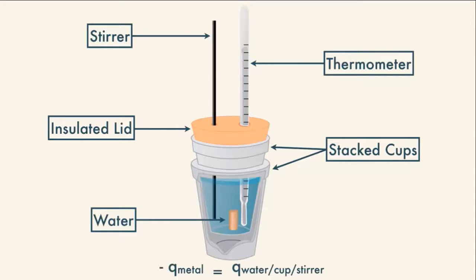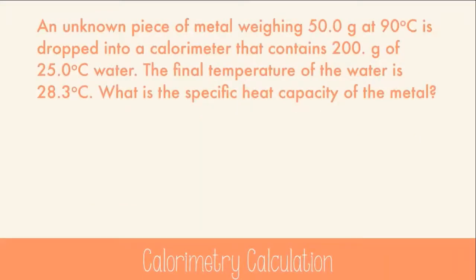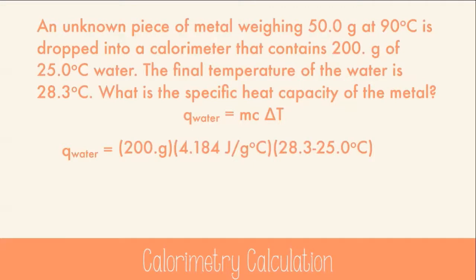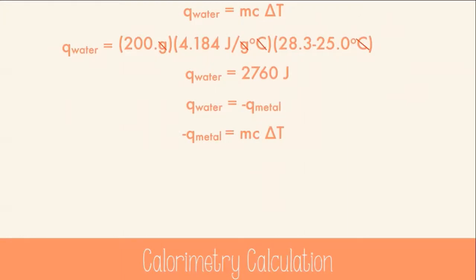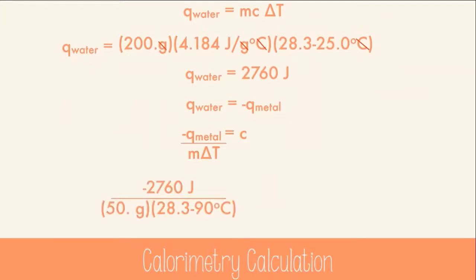An unknown piece of metal weighing 50 grams at 90°C is dropped into a calorimeter with 200 grams of 25°C water; the final temperature is 28.3°C. What is the specific heat capacity of the metal? First, calculate heat absorbed by the water: Q = 200 g × 4.184 J/g·°C × (28.3 − 25) = 2,760 joules. Since the water could only absorb heat released by the metal, the same amount of heat was released. Solving for specific heat: C = Q / (m × ΔT). We get 0.9 J/g·°C — the specific heat of aluminum.